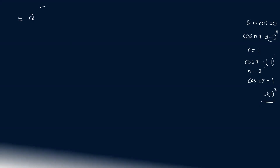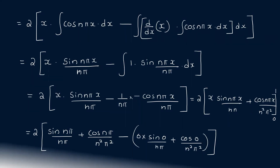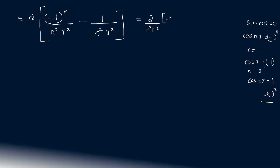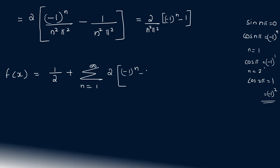So the expression simplifies: sin n pi equals 0, cos n pi equals minus 1 raised to n, and cos 0 equals 1. Therefore aₙ equals 2 into minus 1 raised to n by n squared pi squared, minus 1 by n squared pi squared. That is, aₙ equals 2 by n squared pi squared times minus 1 raised to n minus 1.